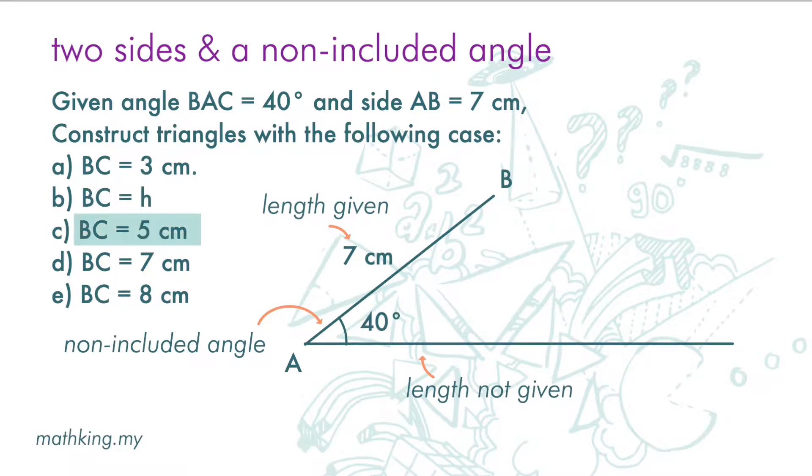If BC is 5 cm, we can get two triangles that fit the information provided.